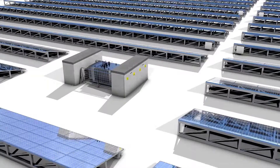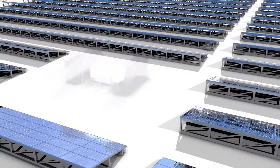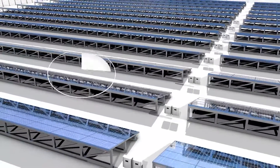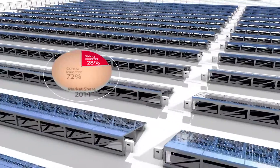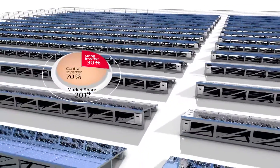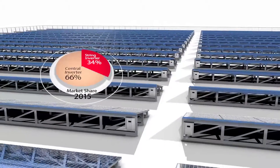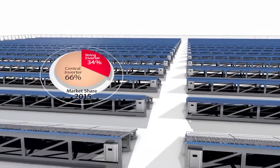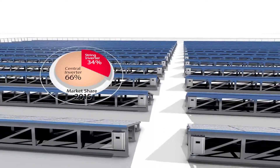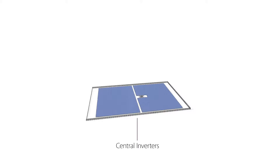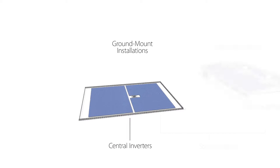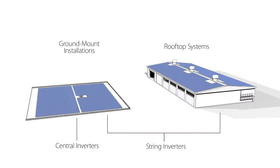For these reasons, decentralized architecture that uses multiple string inverters instead of central inverters is gaining market share. String inverter topology allows higher system availability, lower land use, and lower operation and maintenance expenses. While central inverters are typically used in ground mount installations, string inverters are used in both ground mount and rooftop systems.